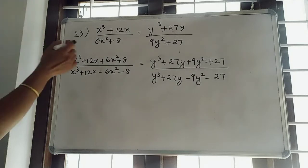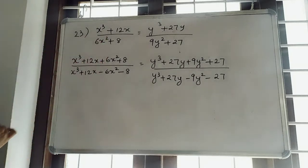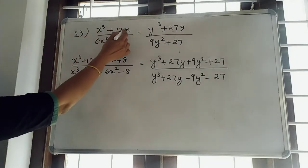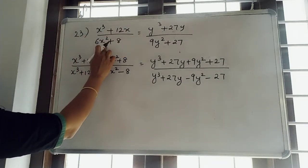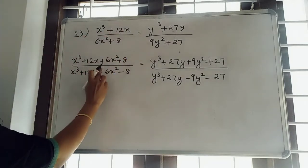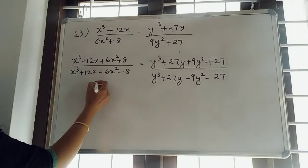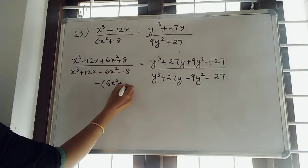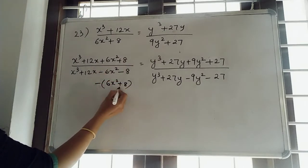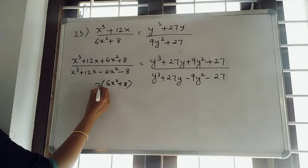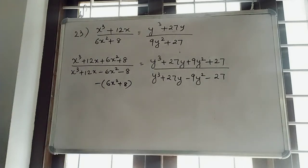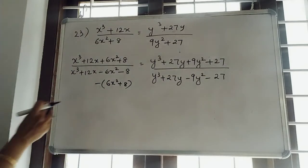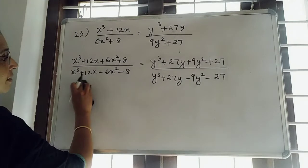So, x³ + 12x + 6x² + 8 divided by x³ + 12x minus of 6x² + 8. So, it will be minus of 6x² + 8. If we change the bracket, we will get it as negative 6x² minus 8. Same thing we can do in the RHS also.